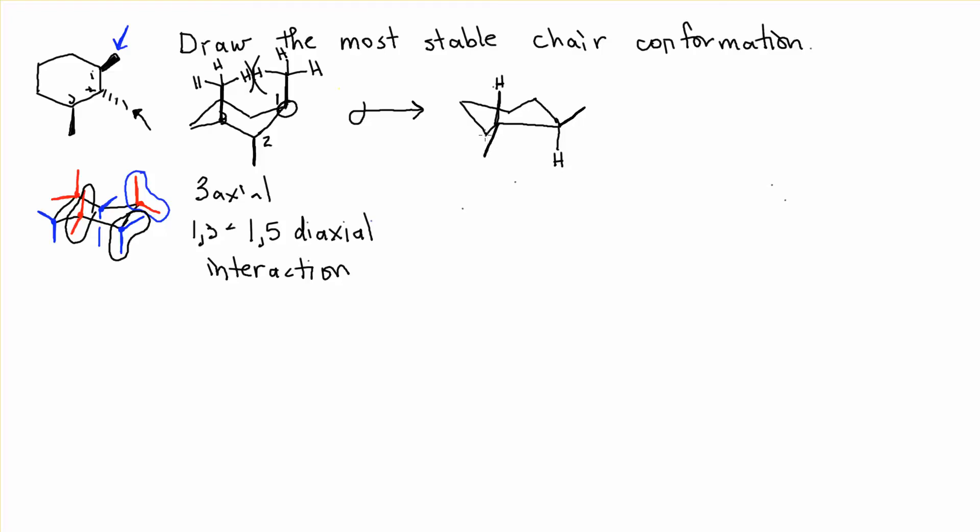And in carbon number 3, the hydrogen is down, the methyl group is up. So this is the most stable chair conformation. It is tri-equatorial. It's got all three groups in the equatorial positions, giving it the most stability.